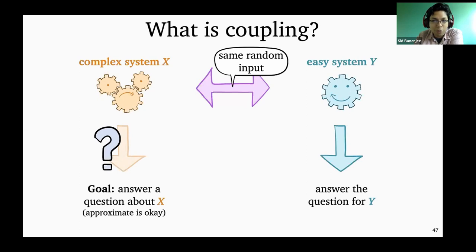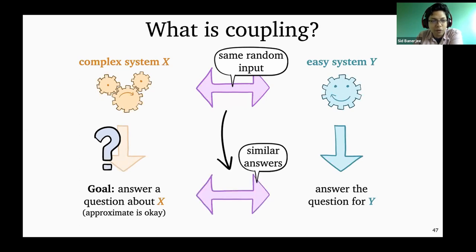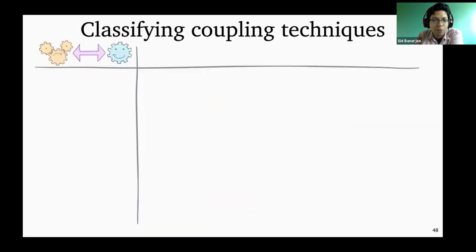If the easy system is easy enough, hopefully we know the answers to the questions we have. The meat of these coupling arguments is in somehow comparing — taking the answer for y and putting it over to get an approximate answer for x.